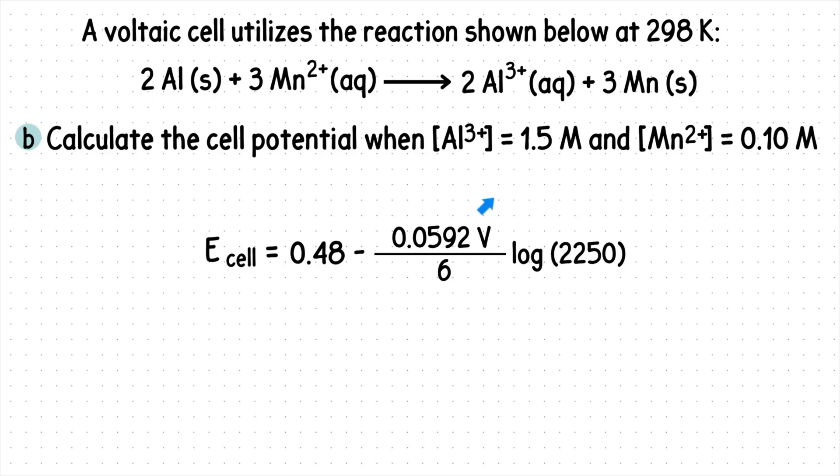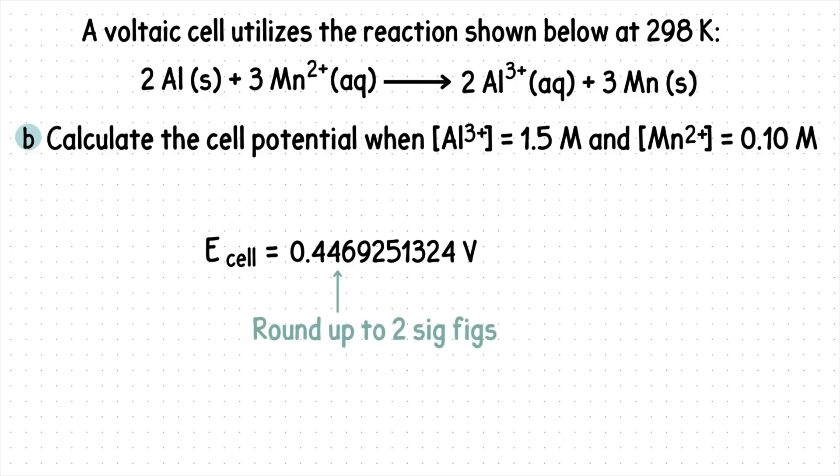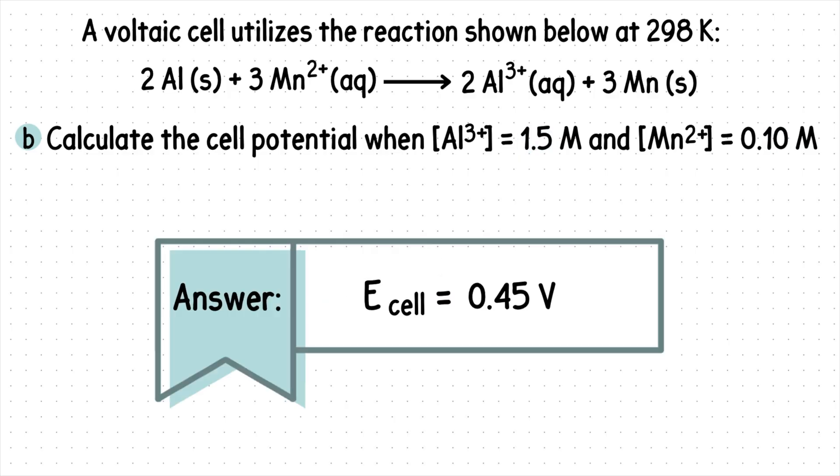Be careful with the math here. To avoid calculator mistakes, we will do these highlighted parts separately, since we really are multiplying these two. So divide this first, then take the log of this value. Multiply these two values, then subtract. Don't forget about your sig figs. We'll round up to two sig figs, since that was the lowest amount of sig figs given in the question. Our cell potential is 0.45 volts.